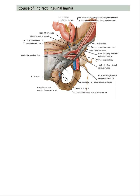And as you see here, the hernia sac with the spermatic cord contents, vas deferens, and vessels of the spermatic cord. This is the hernia sac, as demonstrated by the arrow.